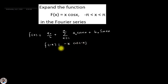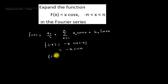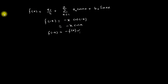We know that cos(-x) = cos(x), so this becomes equal to -x·cos(x). So we can say that f(-x) = -f(x). This is the condition for an odd function, which means the given function is an odd function.